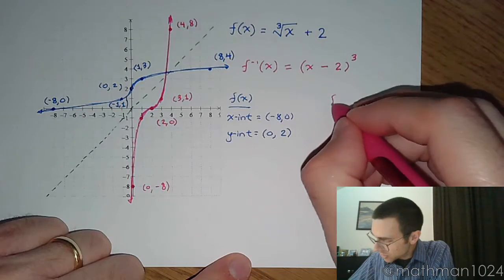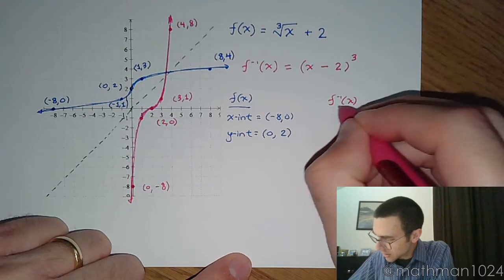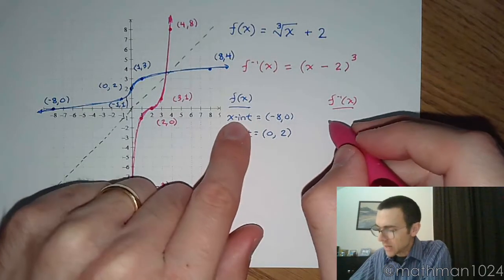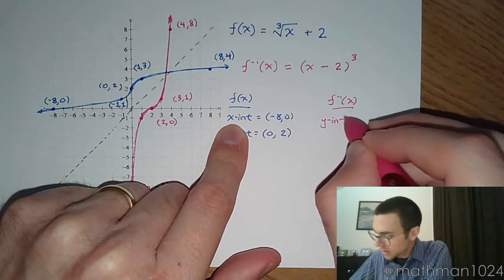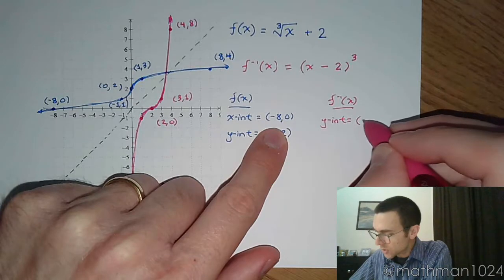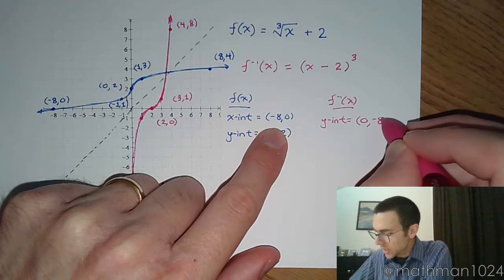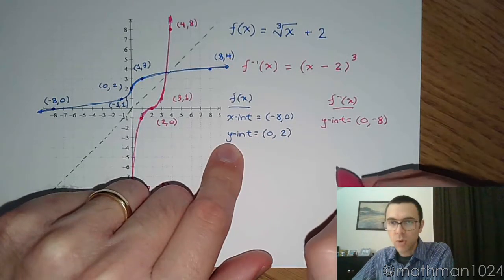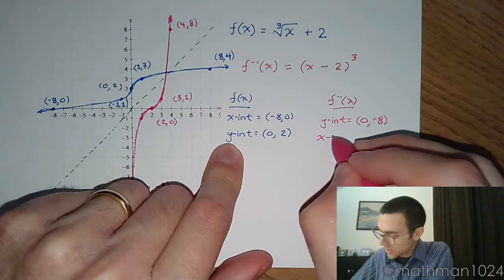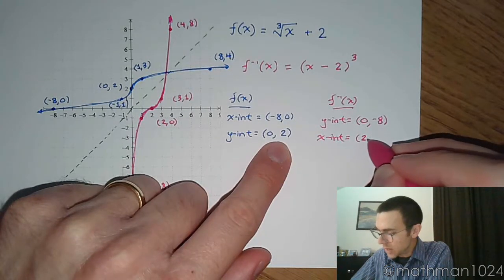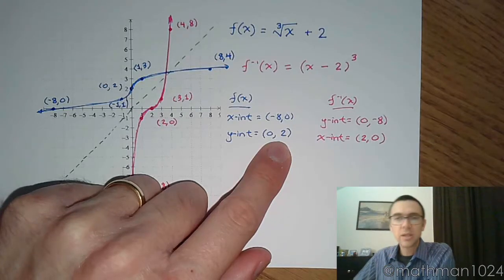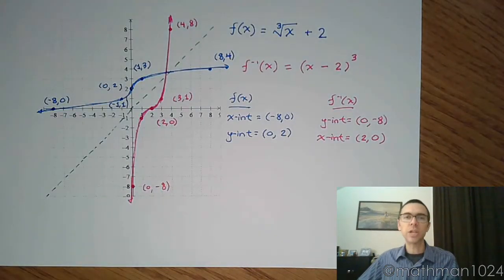And when you compare that to your inverse, instead of an x-intercept at (-8, 0), you have a y-intercept. Swap those coordinates around at (0, -8). And instead of a y-intercept, you have an x-intercept. You swap these coordinates around and you have (2, 0). It's just what we were saying before.